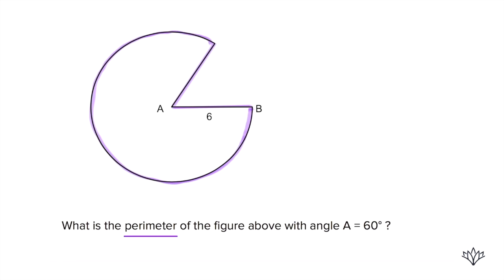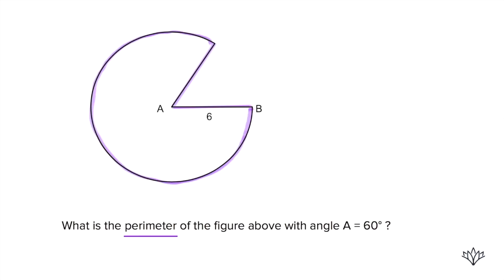We're not dealing with the whole circle; we're dealing with a part of the circle, and it's asking for the perimeter — not the area. The perimeter of a circle is given by the circumference. Circumference equals 2πr, but we're not dealing with the whole circle; we're dealing with part of it.